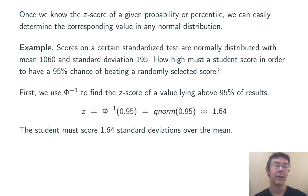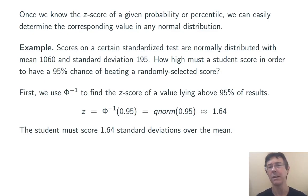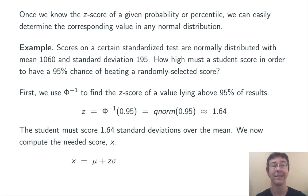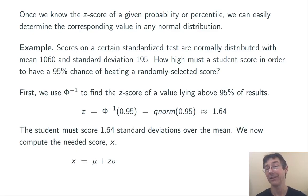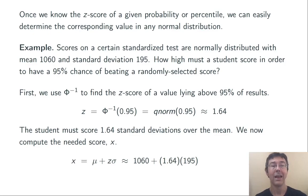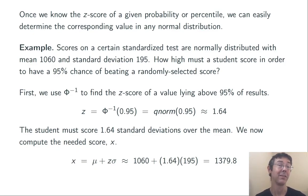So to have a 95% chance of beating a randomly selected score, a student has to score 1.64 standard deviations over the mean. With that interpretation in mind, we can calculate the needed score using the formula x equals mu plus z times sigma. Plugging in the values — mean 1060, z-score 1.64, standard deviation 195 — we get 1379.8. The student has to score about 1380 to be at the 95th percentile of this distribution.